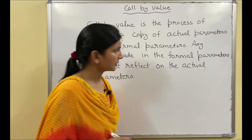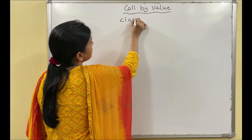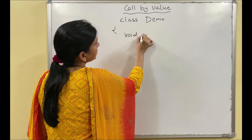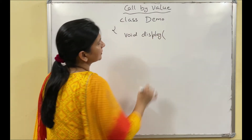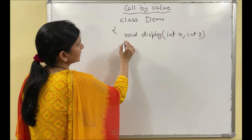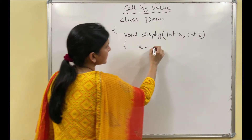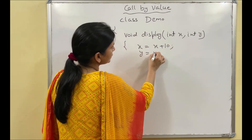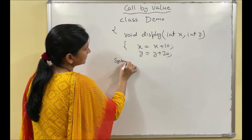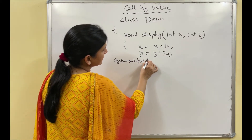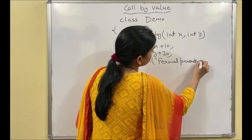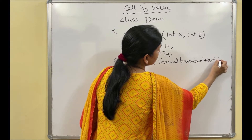Let's understand this with a program. First we make a class Demo, then a function void display with two formal parameters int x and int y. Inside the function, x equals to x plus 10 and y equals to y plus 20. Then we display the formal parameters: system.out.println formal parameters equals to x and y.